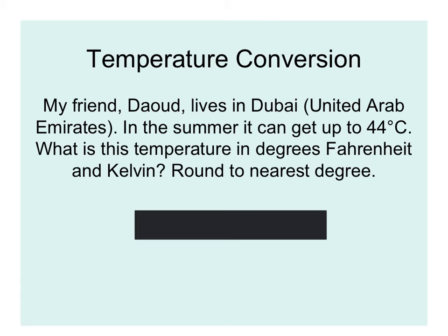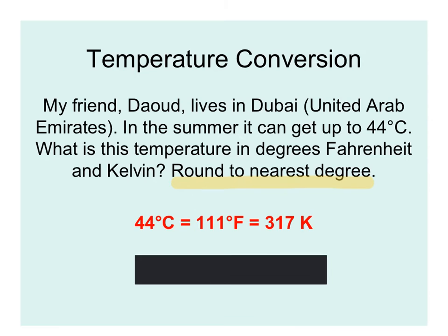My friend Dawood grew up in Dubai in the United Arab Emirates, and in the summer it can get up to 44 degrees Celsius — very different from 44 degrees Fahrenheit. Take a moment with your partner, pull out your calculator, and find this temperature in Fahrenheit and Kelvin, rounding to the nearest degree. 44 degrees Celsius equals 111 degrees Fahrenheit, or 317 Kelvin — a very typical summer day there.